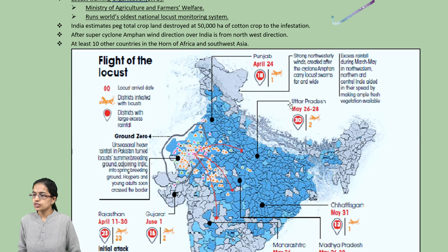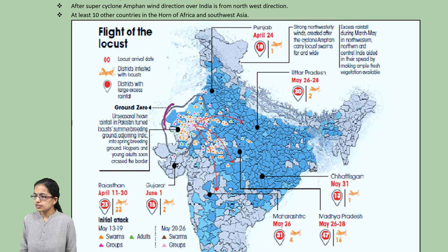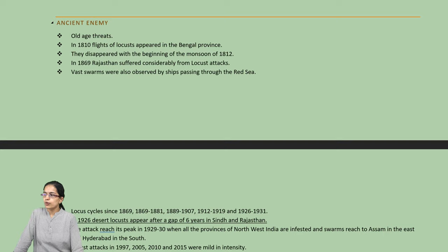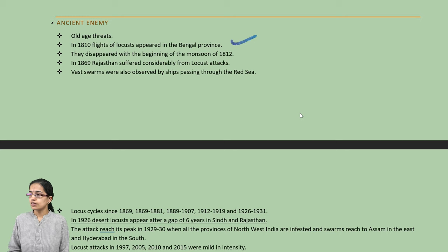This was basically the epicenter of this locust plague and slowly and gradually it has spread to other regions across India. This has been reported by the Food and Agricultural Organization. This locust has been one of our ancient enemies — since 1810, Bengal has been affected severely because of it.